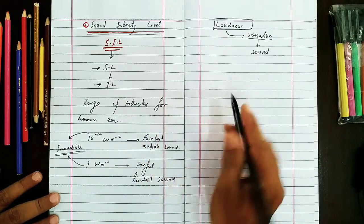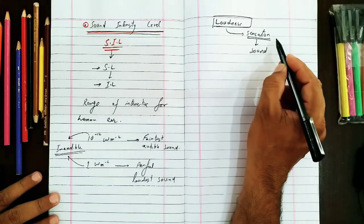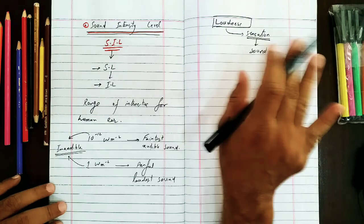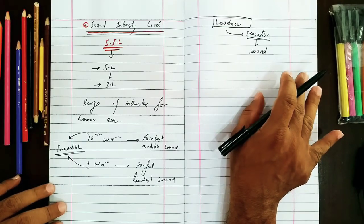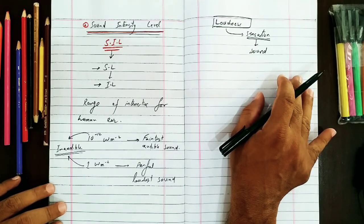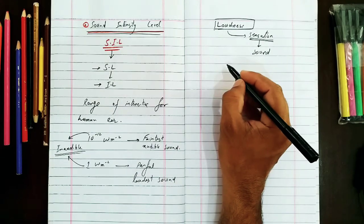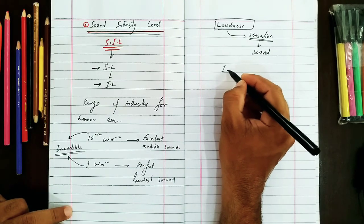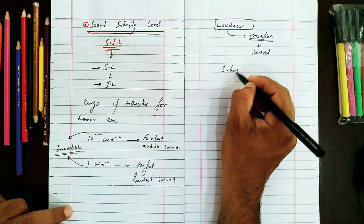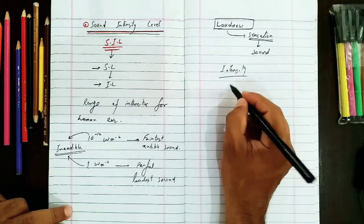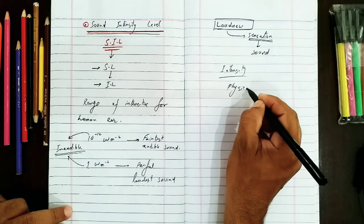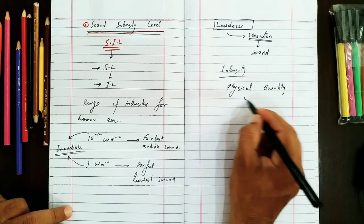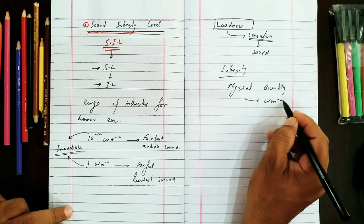What is loudness? It is not a physical quantity, that's why it cannot be measured. But intensity is a physical quantity which can be measured in watt per square meter. Intensity is a physical quantity which you can measure in watt per square meter.